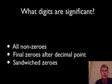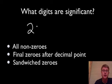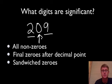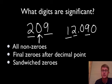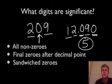The next type I call sandwiched zeros. Take 209 — the 2 and 9 are significant because they're non-zero, and the 0 is sandwiched between them, so it's also significant. Another example: 12.090. Applying all our rules — the 1, 2, 9 are significant; the 0 is sandwiched between 2 and 9; and the final 0 is after the decimal place. So this number has 5 significant digits.